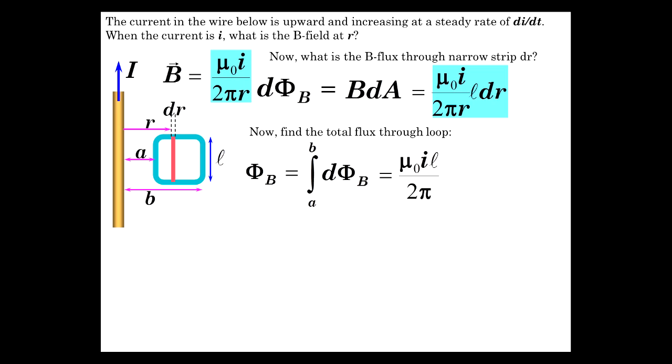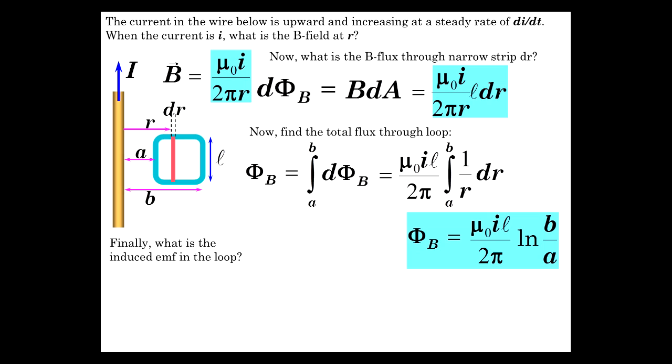μ₀IL over 2π constant. Integral of 1 over R dR from A to B. Gives us natural log, right? μ₀IL over 2π ln(B/A). There's that answer.